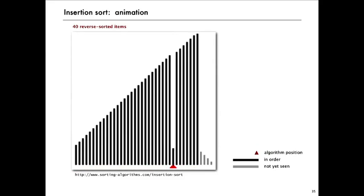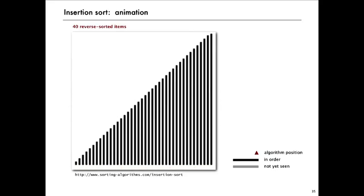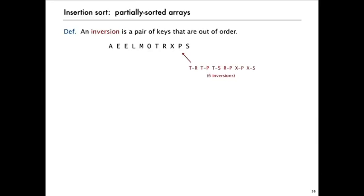So this is a bad case that we wouldn't like to see in a practical application. But there's also a good case that actually we take advantage of in plenty of practical applications. And that has to do with when the array is partially sorted. To talk about this in a quantitative way, we define what's called an inversion.